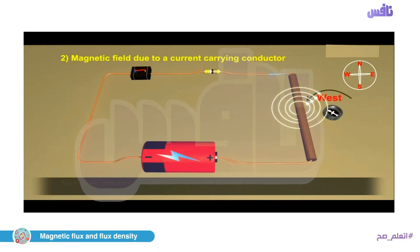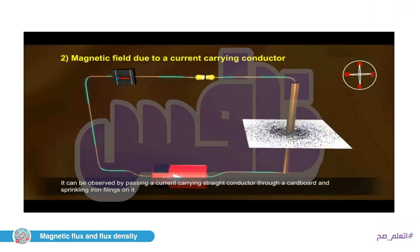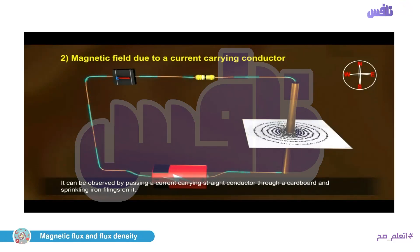The current direction flows from positive to negative. The direction of magnetic flux lines is to the east. If we reverse the current — from negative to positive — then the direction of magnetic flux lines will be to the west. Nails of iron around the wire take a circular shape centered on the straight wire.